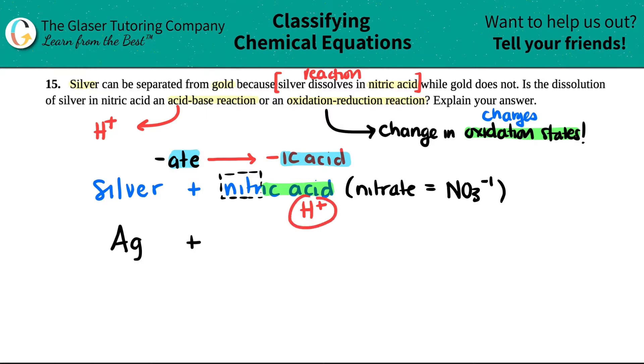So if I have H plus mixing with NO3 minus to get my nitric acid, it's a plus one, it's a minus one. So when you crisscross them, they kind of go bye-bye. It's a one for one. So nitric acid would just be HNO3.